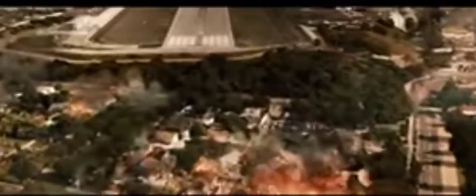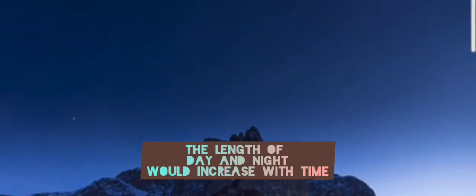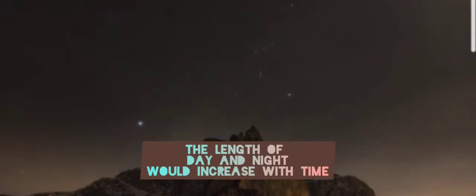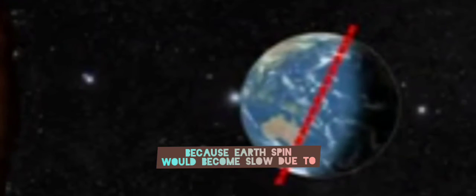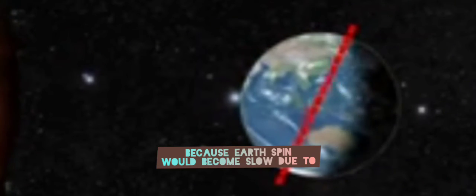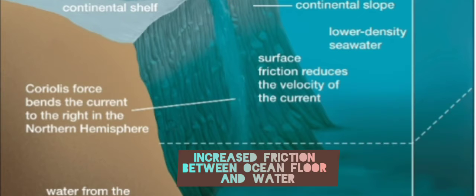On this destroyed planet, the length of day and night would increase with time because Earth's spin would become slow due to increased friction between the ocean floor and water.